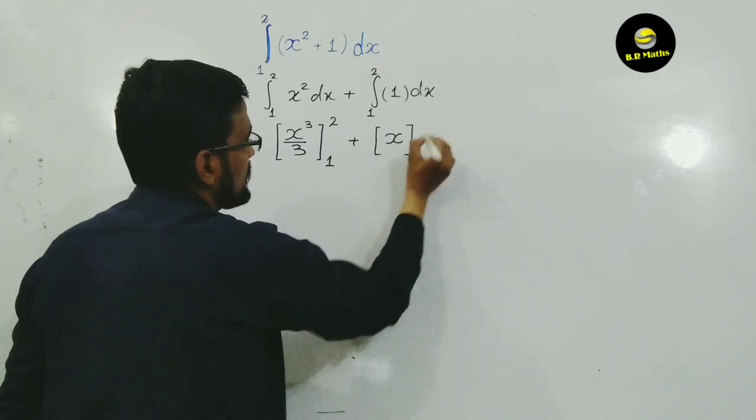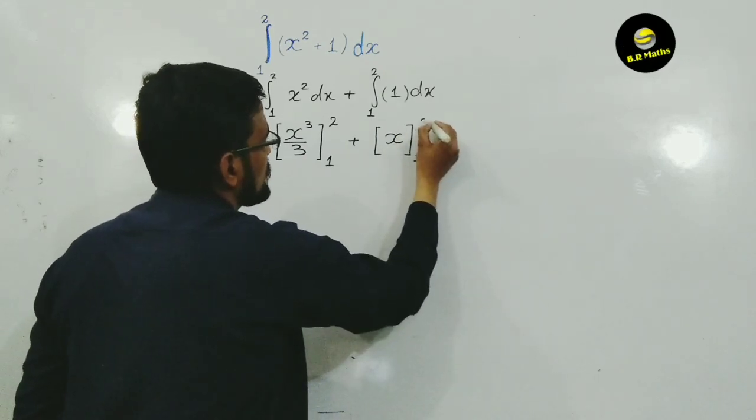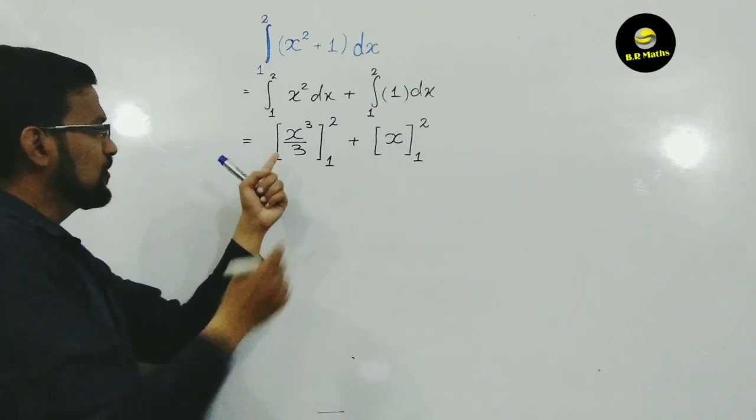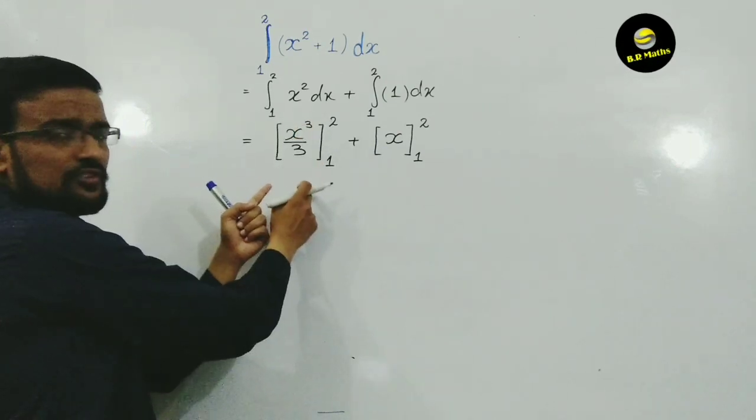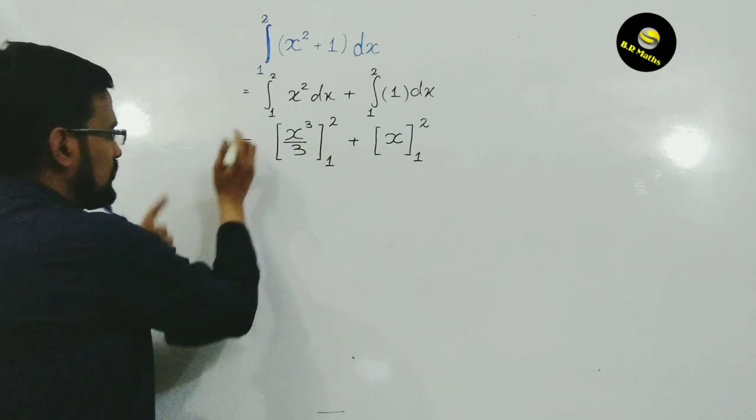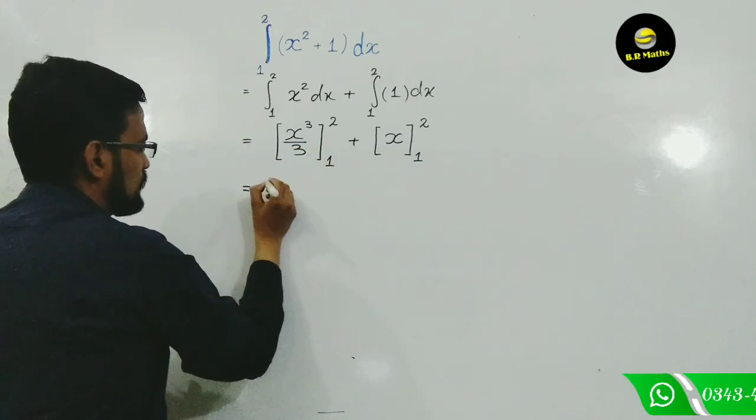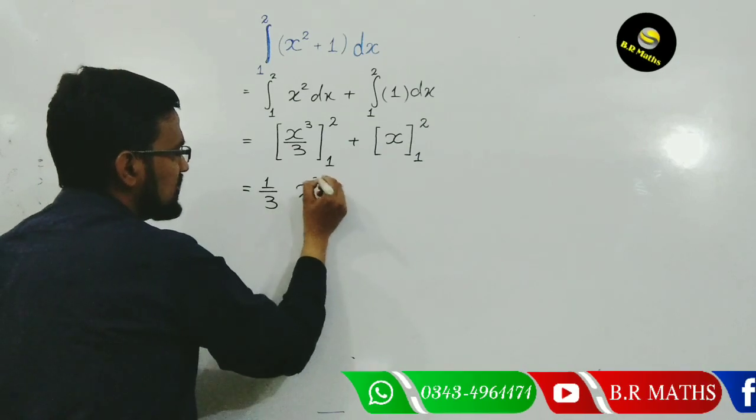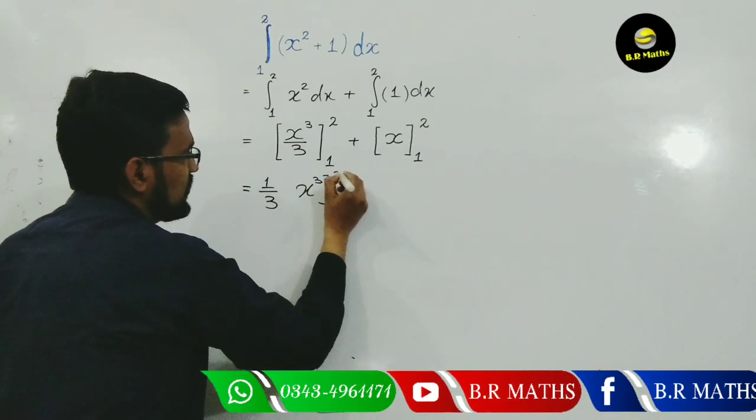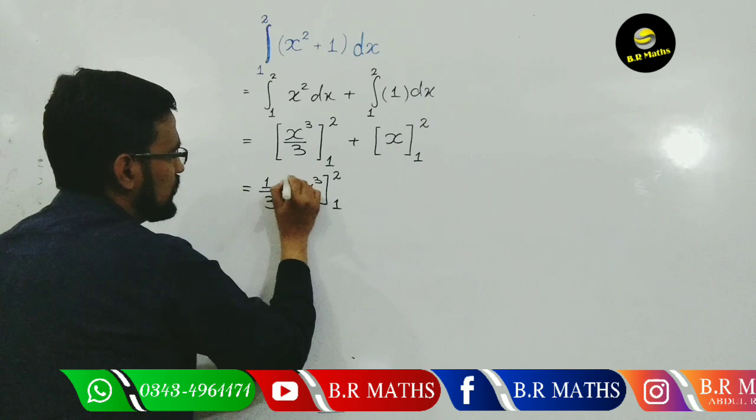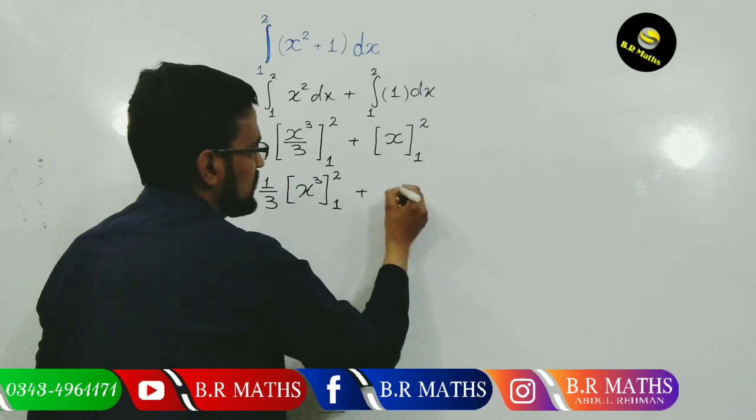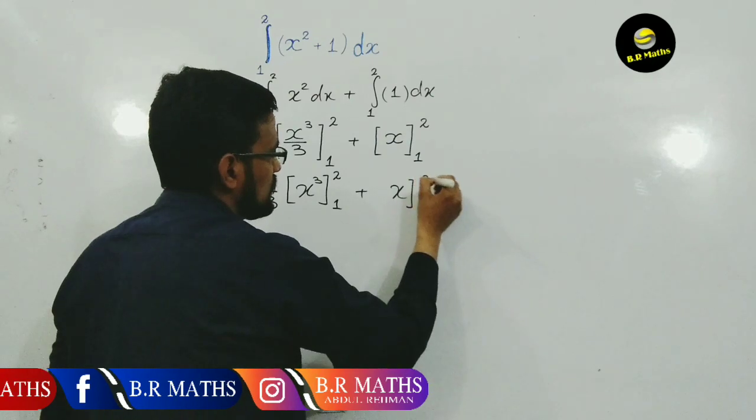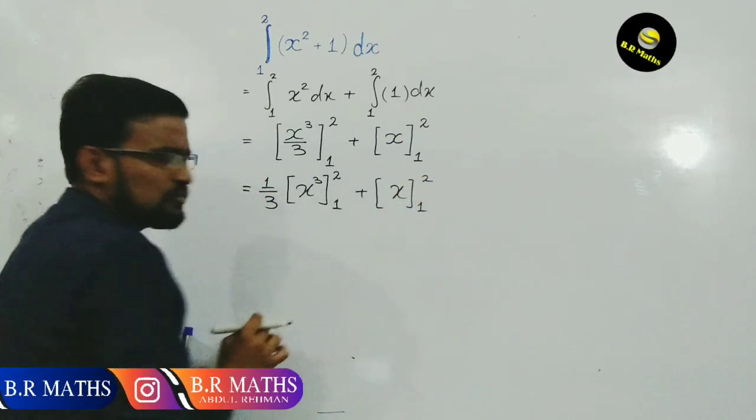So student, x cube over 3 - 3 is a constant, so separate 1 over 3 x cube with limit 1 to 2, plus here x limit 1 to 2. Now student, put the values of x.